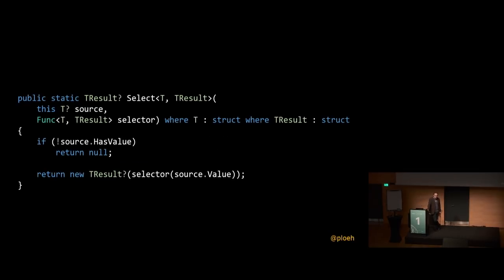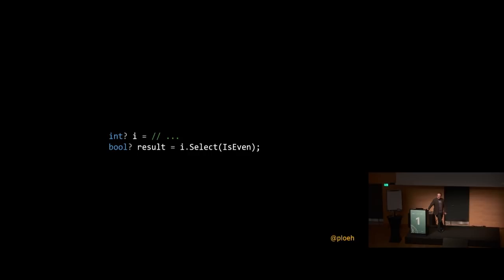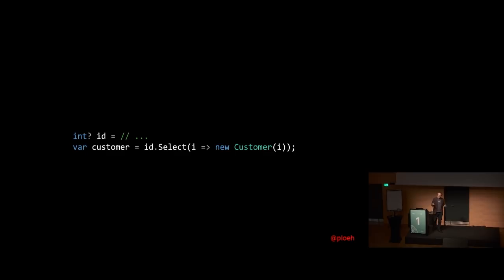What if we turn Nullable<T> into a functor? The Select method isn't in the core library but you can add one — with the constraint that both T and TResult must be structs (value types), because Nullable<T> itself has that constraint. This enables transforming a Nullable<int> into a Nullable<bool>, and all the if-else logic is captured inside that Select method, which composes much better. But you can't do something like transforming a nullable int into a Customer because Customer is a reference type — the constraint prevents it.